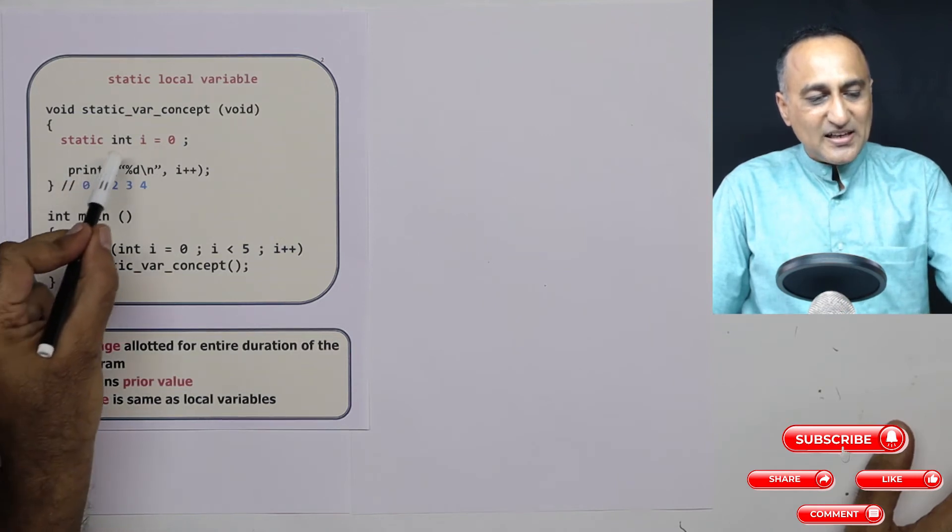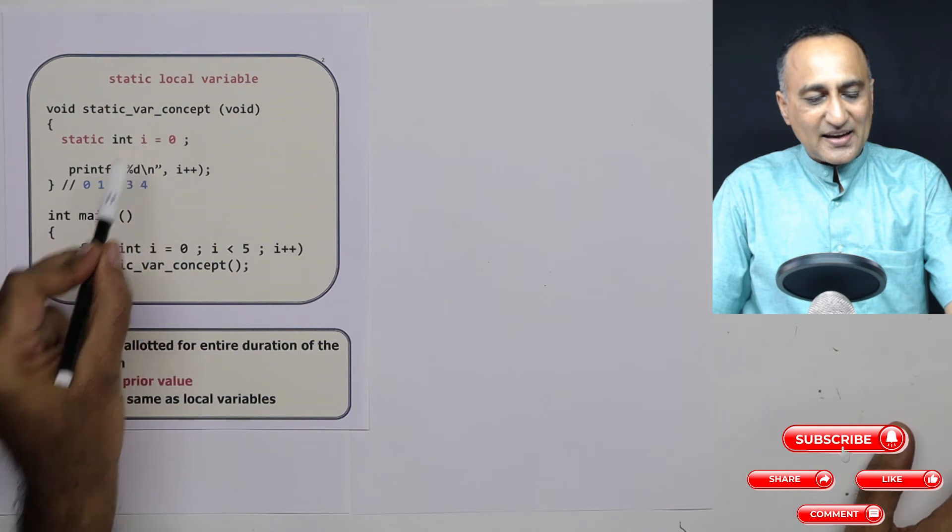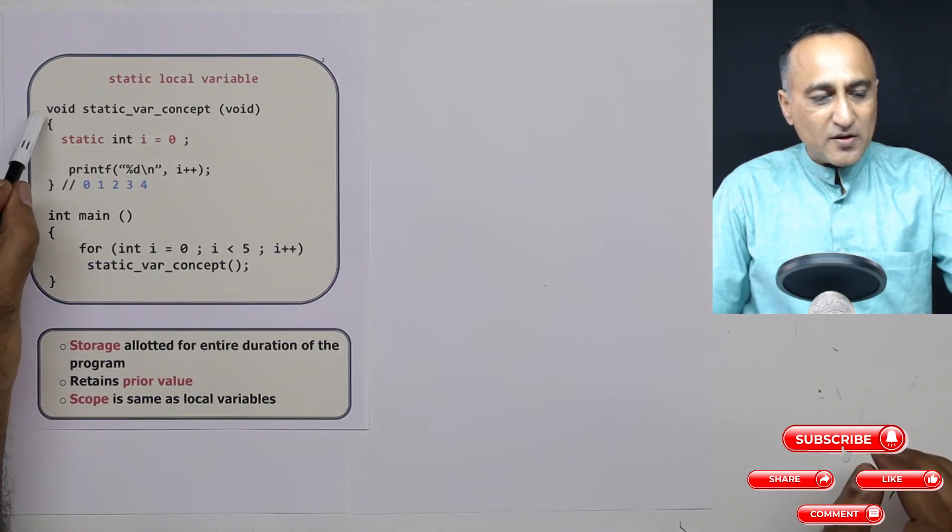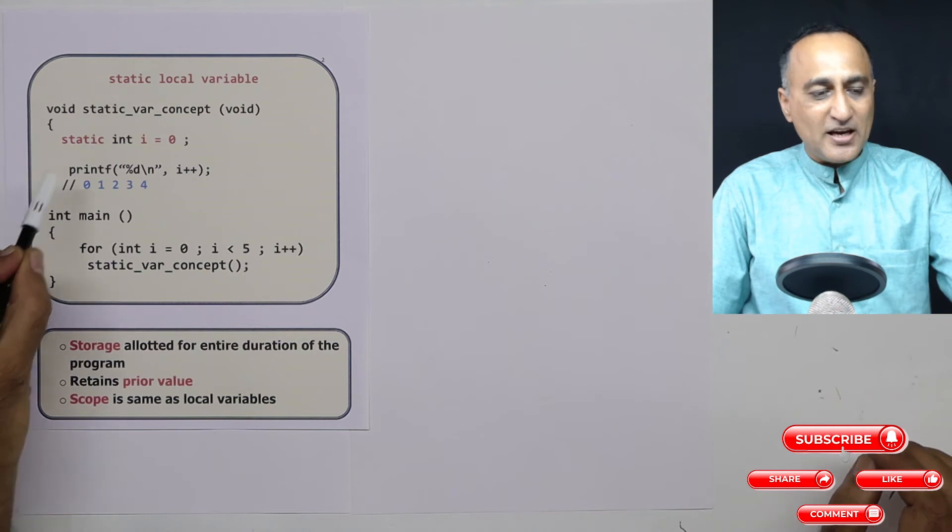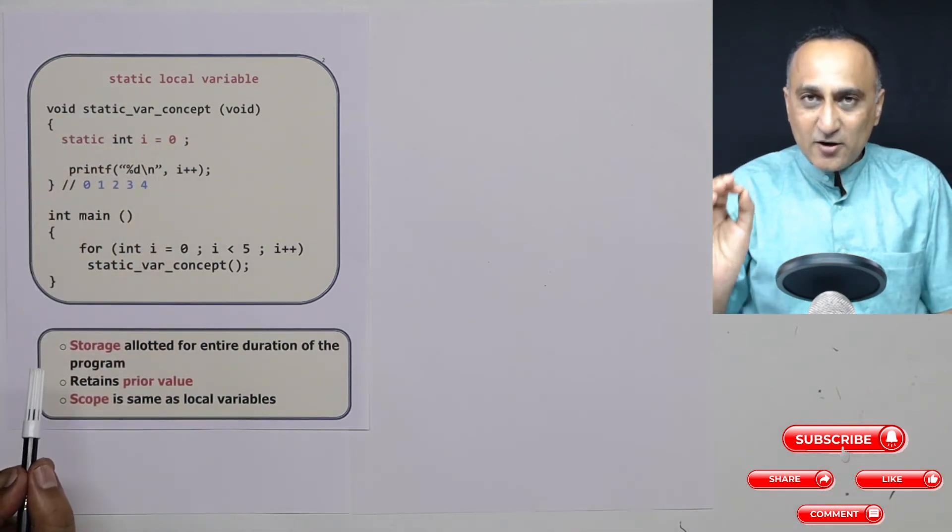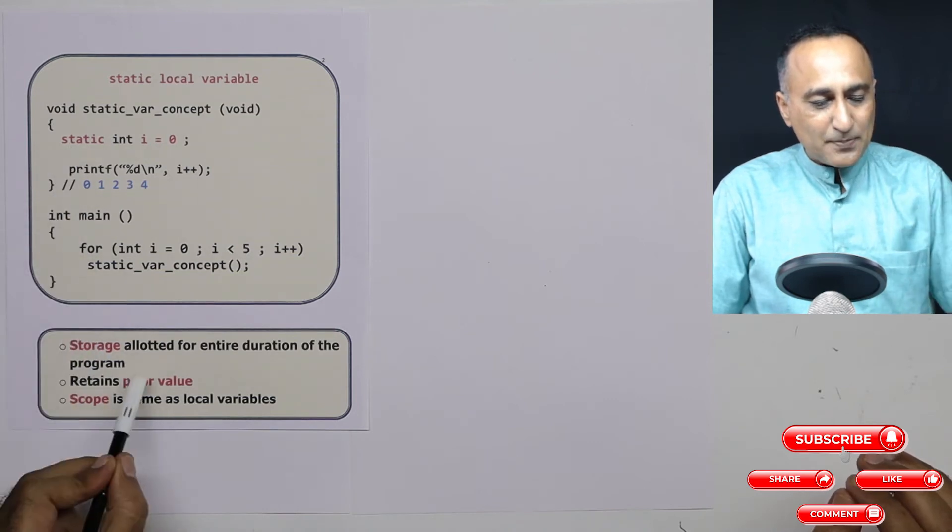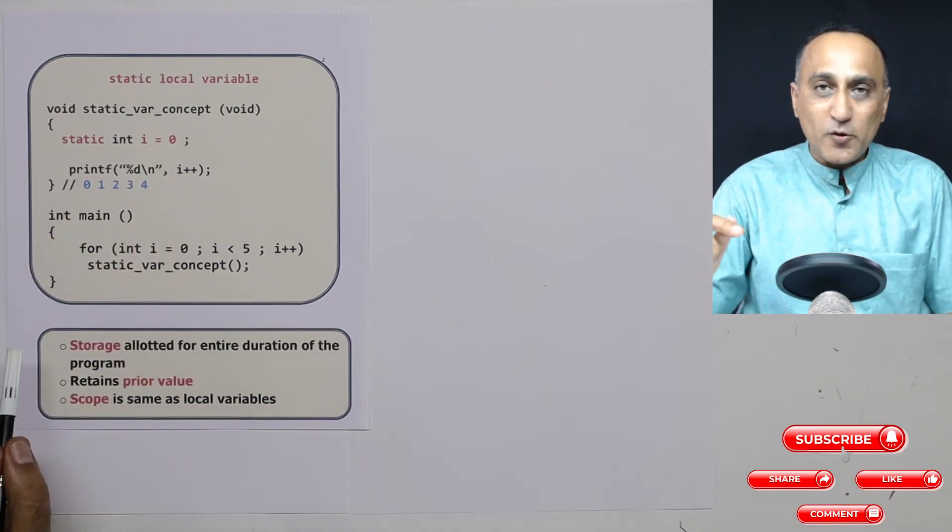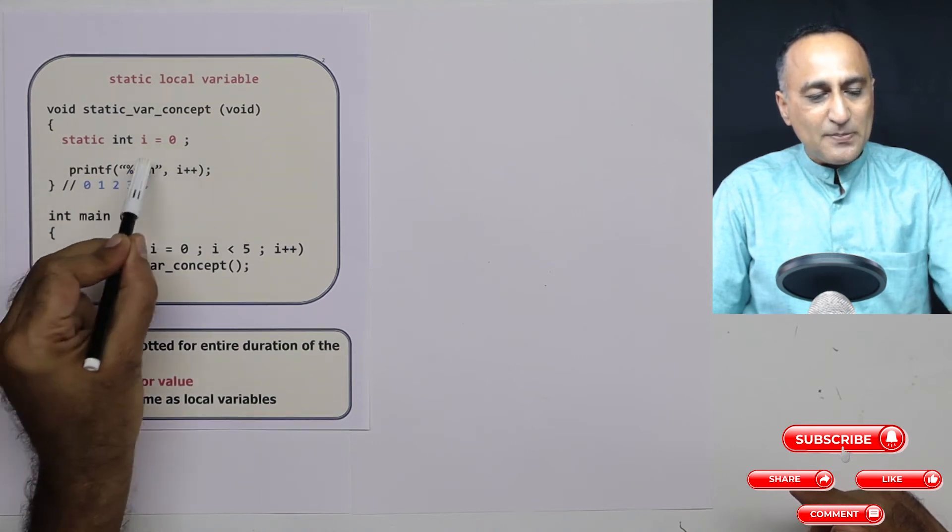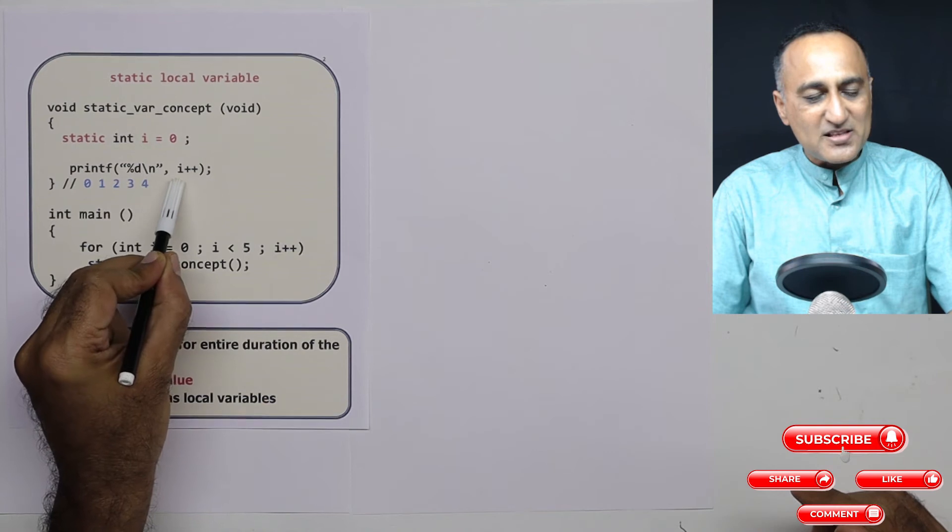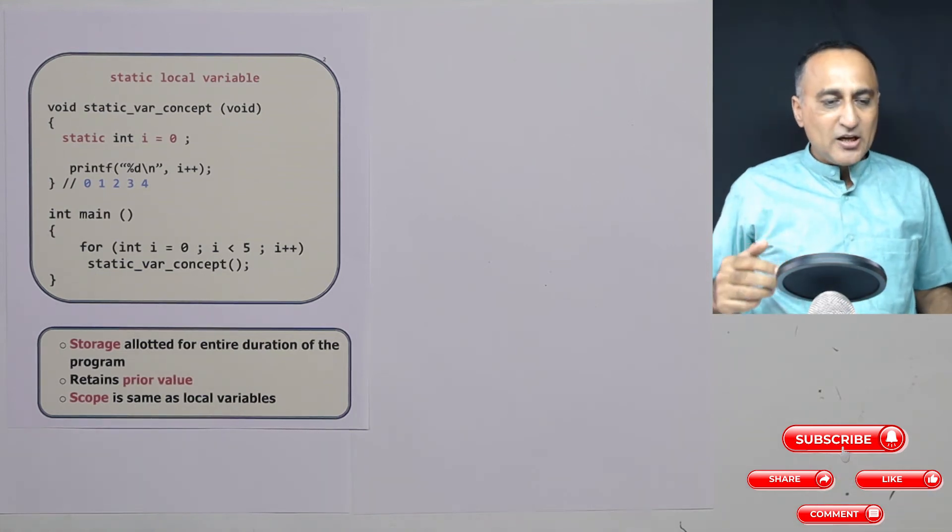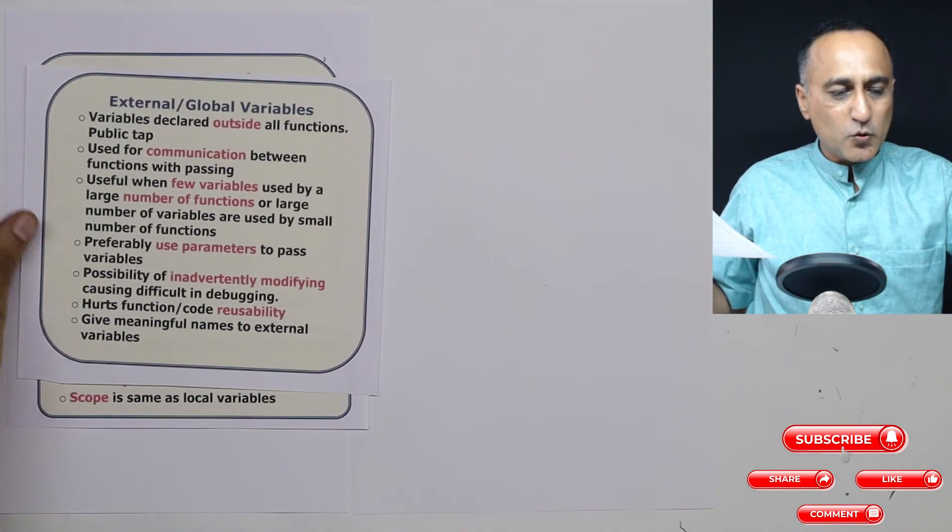The next important aspect is this storage for this static int i is allocated for the entire duration of the program. Automatic variables were created when the function was called and destroyed when the function exited. But here, once they are created at the beginning of the program, they will remain in existence till the end of the program. Now it retains the prior value, I had already told you about i returning the old value when you keep calling it. Next is the scope of this i is only between this particular bracket. In place of i, I had said say j, and I had made this as j plus plus. If I had tried to print j here, I would have got a compile time error. So I hope you understand what is a local static variable.